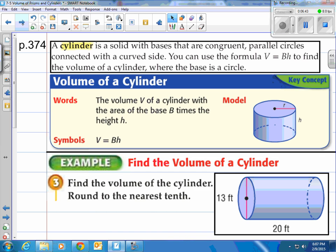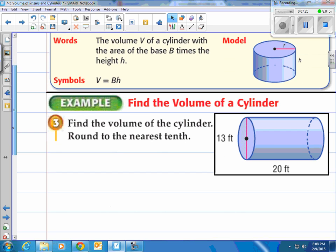How about cylinders? Cylinders are solids with bases that are congruent, parallel circles connected with a curved side. It's like a can. You can use the formula V equals B times H, base area times height, to find the volume of the cylinder, where the base is a circle. So this is just like prisms. Just notice that the base is going to be a circle. So the volume V of the cylinder, with the area of the base B times the height H, is just like the one that we used before for prisms. V equals capital B times H, or base area times height.